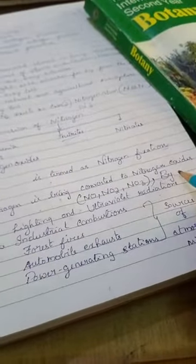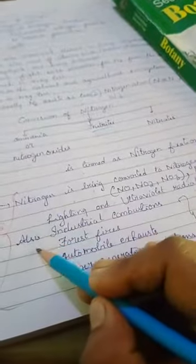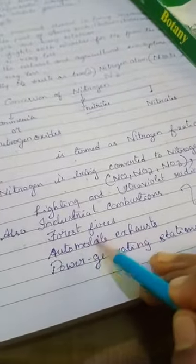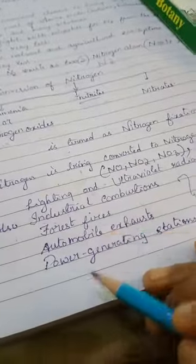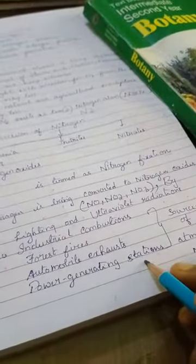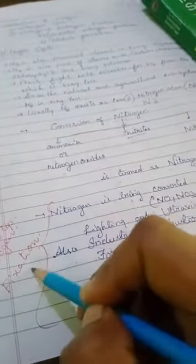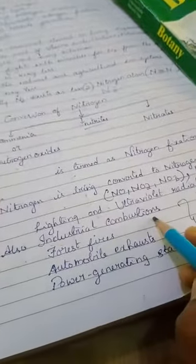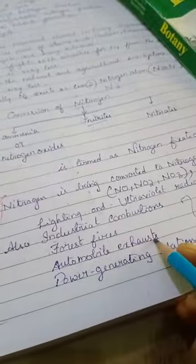The sources of atmospheric nitrogen oxides include lightning and ultraviolet radiations, industrial combustion, forest fires, automobile exhaust, and power generating stations. All of these are sources of atmospheric nitrogen oxides. This constitutes the first step, called nitrogen fixation.